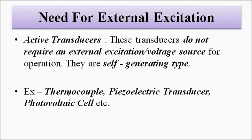Examples of active transducers: Thermocouple responds to change in temperature. It has two junctions — a hot junction, which is the measurement junction connected to where temperature is to be measured, and a cold junction or reference junction kept in an ice bath at 0°C or 273 K. It responds to the temperature difference with an equivalent potential difference, generating its own potential. Piezoelectric transducers respond to pressure or force applied perpendicular to the piezoelectric crystal, and the resulting deformation produces an electric potential across its ends.